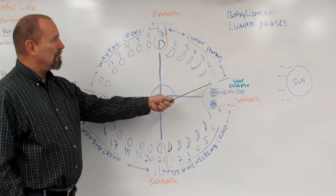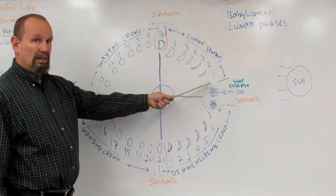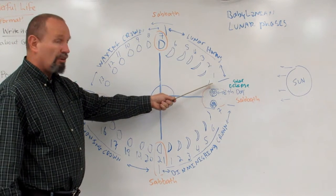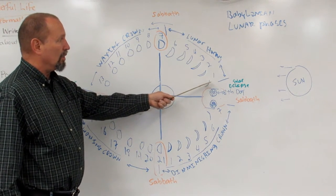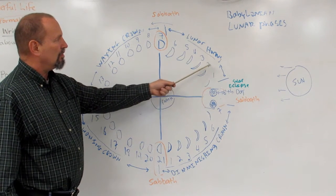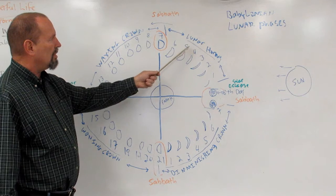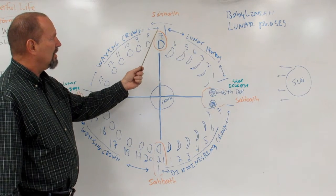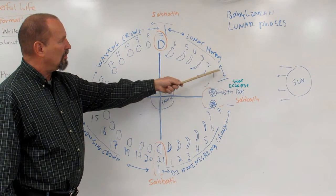Our new moon is when the crescent or the first horns of the new moon is seen, and this starts day one, two, three, four, five, six, seven. This is the lunar horns.